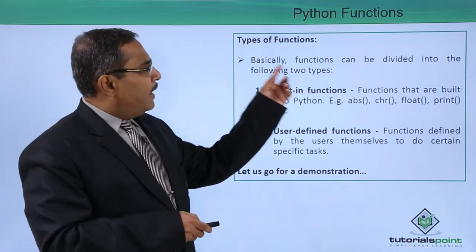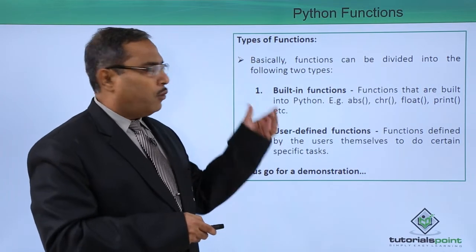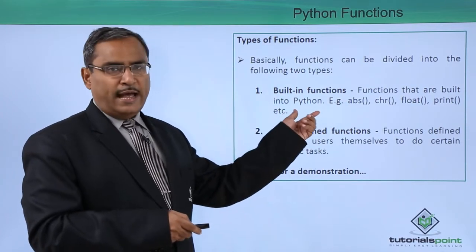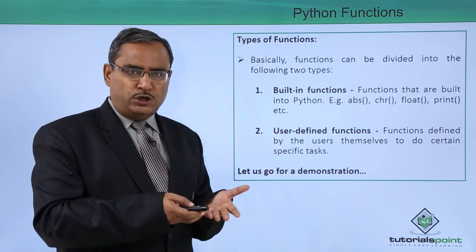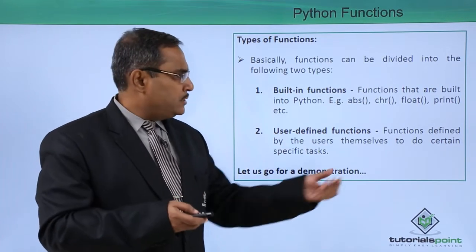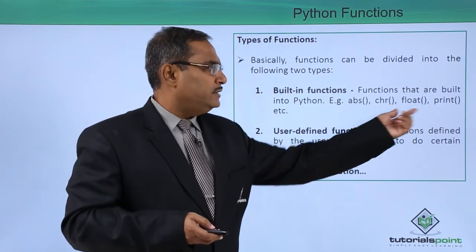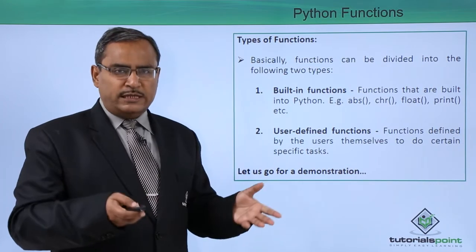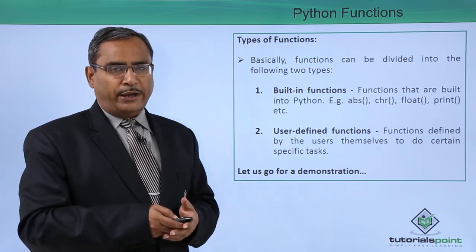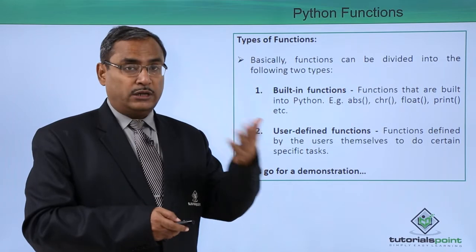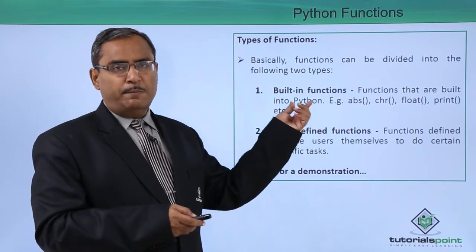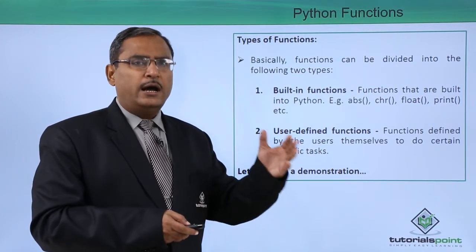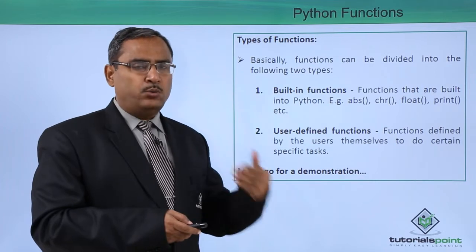Functions can be divided into two types. The first type is built-in functions — functions built into Python — such as abs(), which gives the absolute value, chr(), float() for type conversion, and print(), which we use multiple times to print strings to the console. These are inbuilt functions; we need not write code for them as they are pre-written and can be readily used.